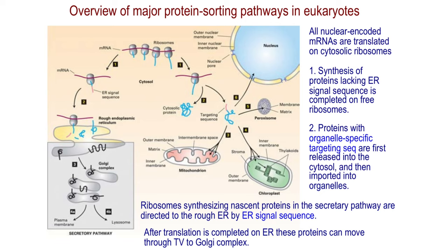In the cytosol, there are numerous ribosomes, which consist of a small subunit and a large subunit. These ribosomes would attach to the messenger RNA. This messenger RNA has a five-prime end here and a three-prime end here, because messenger RNA is always made from five-prime to three-prime, and ribosomes also read it from five-prime to three-prime.